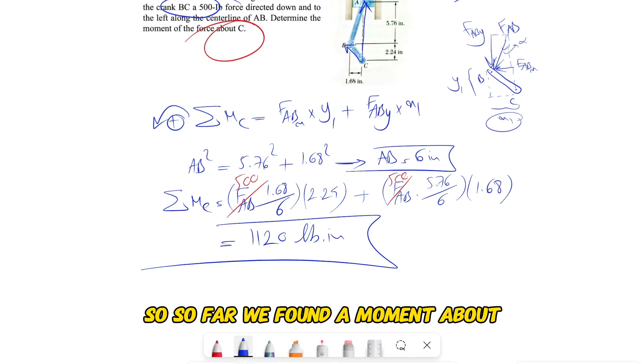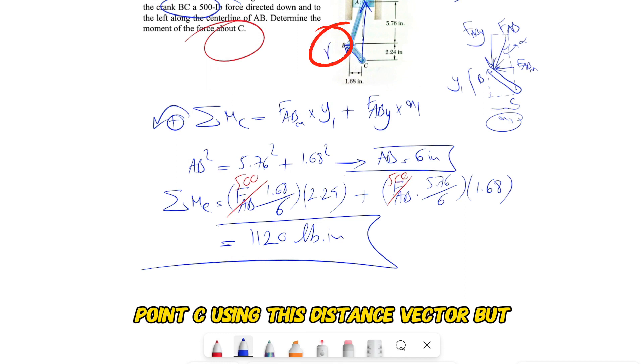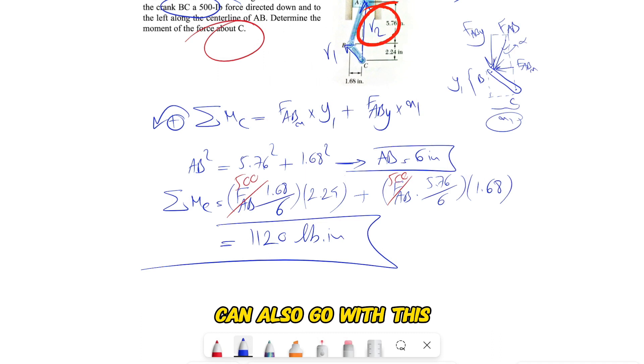So so far we found the moment about point C using this distance vector, but you can also go with this distance vector as well.